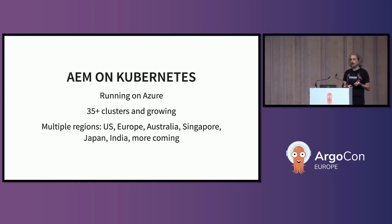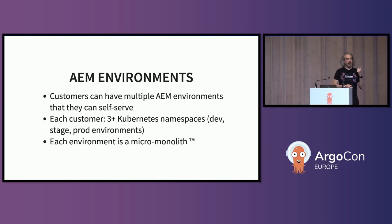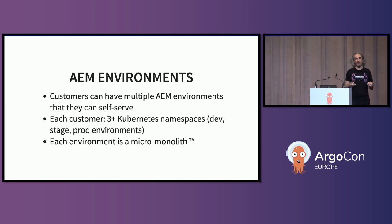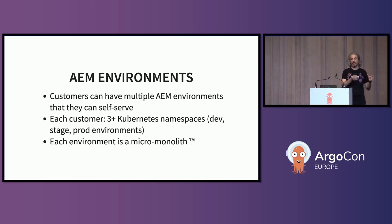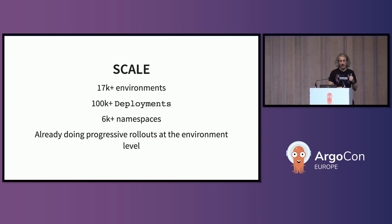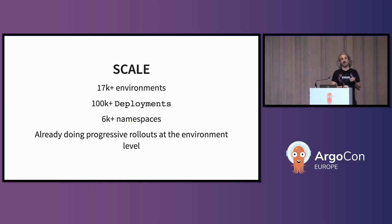Some statistics: we have more than 35 clusters, and probably now closer to 40, across multiple regions, because people want to run this close to their customers. Customers can have multiple environments and create new ones whenever they want, and we translate these into Kubernetes namespaces. What I like to call these environments are 'micro monoliths' — we scale by giving customers their own instances and their own deployments. So it's not one service with thousands of pods; it's thousands of services with a few pods. We have 17,000 environments, which translates into over 100,000 deployment objects across all our clusters and more than 6,000 namespaces.